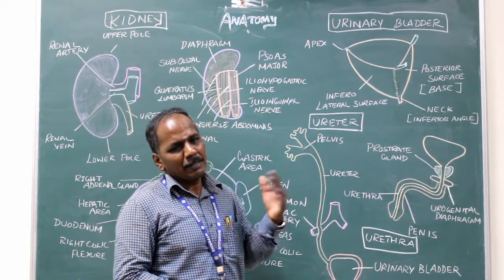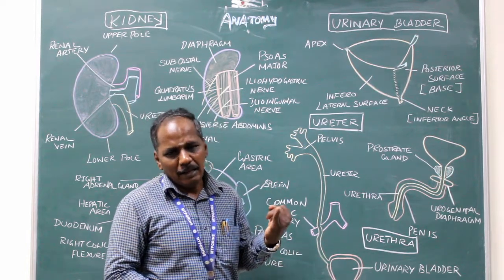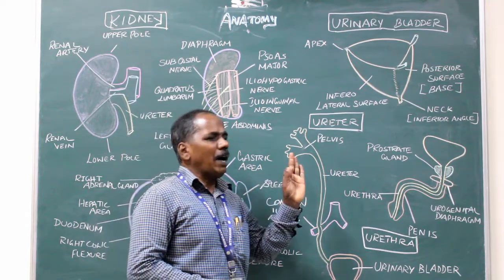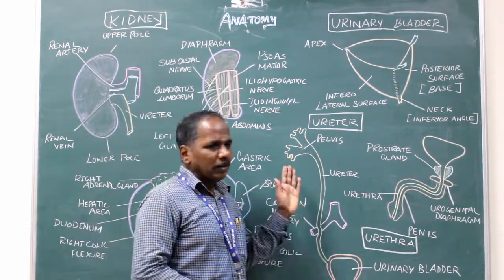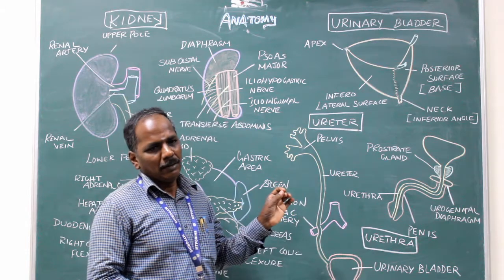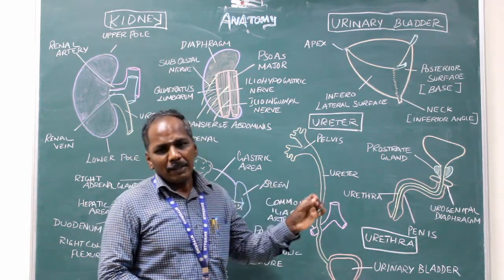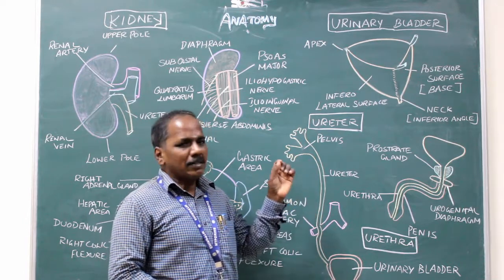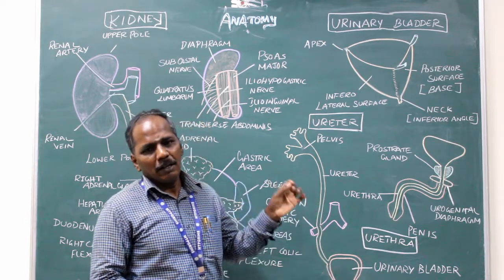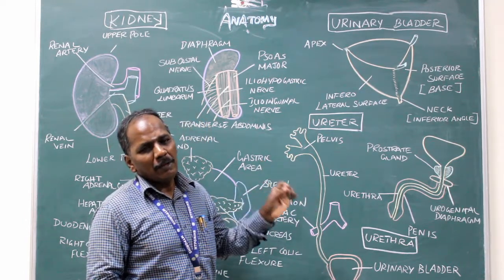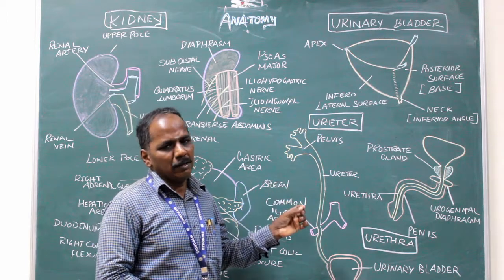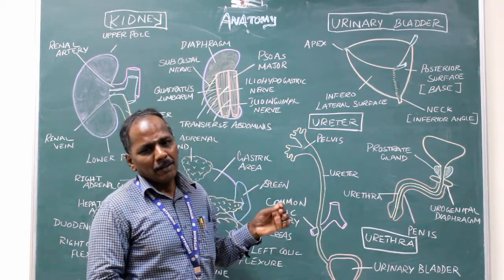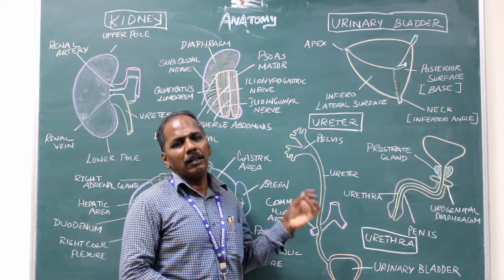Blood supply of the ureter: renal artery, branches from the abdominal aorta, and gonadal arteries. Nerve supply: it has sympathetic and parasympathetic supply. The sympathetic is derived from T12 to L1 segments of the spinal cord. The parasympathetic is supplied by the pelvic splanchnic nerves.